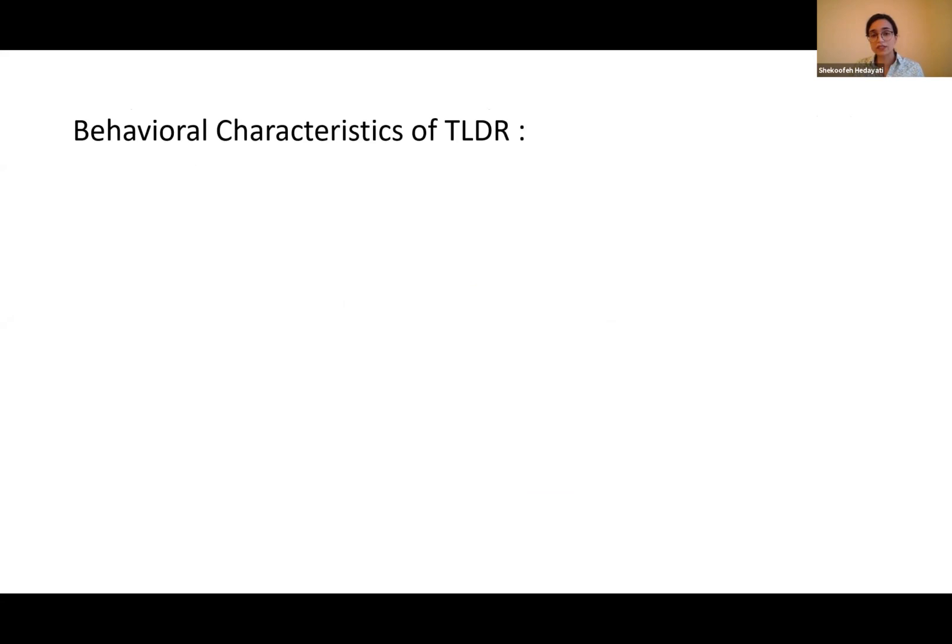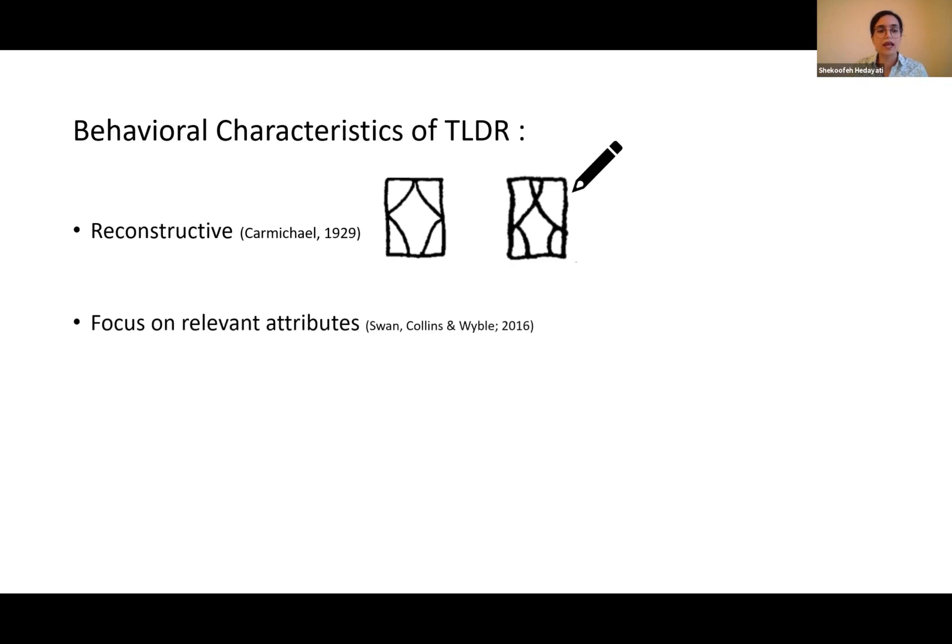It is reconstructive. If we show people this image, they're able to draw that image from their memory as Carmichael did in 1929. The model can focus on relevant attributes. There was a study showing that if people are shown an oriented arrow with a color and asked about its color for 25 trials, in a surprise trial when they're asked to report the orientation, they don't have good memory for that. Their memory for orientation is poor.